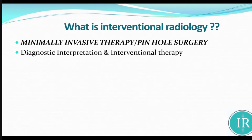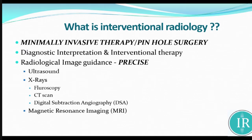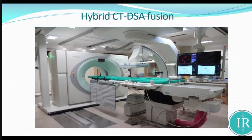It is a precise radiological guidance — under ultrasound, X-ray, fluoroscopy, CT scan, digital subtraction angiography, and MRI. This is the hybrid CT DSA fusion machine, in which the CT gantry and table are both moving. In our Tata Memorial Hospital, when a patient had CT and had surgery on the table and had bleeding, the patient had to be diagnosed on the same table and could then have angioembolization. This is the hybrid CT DSA fusion machine.